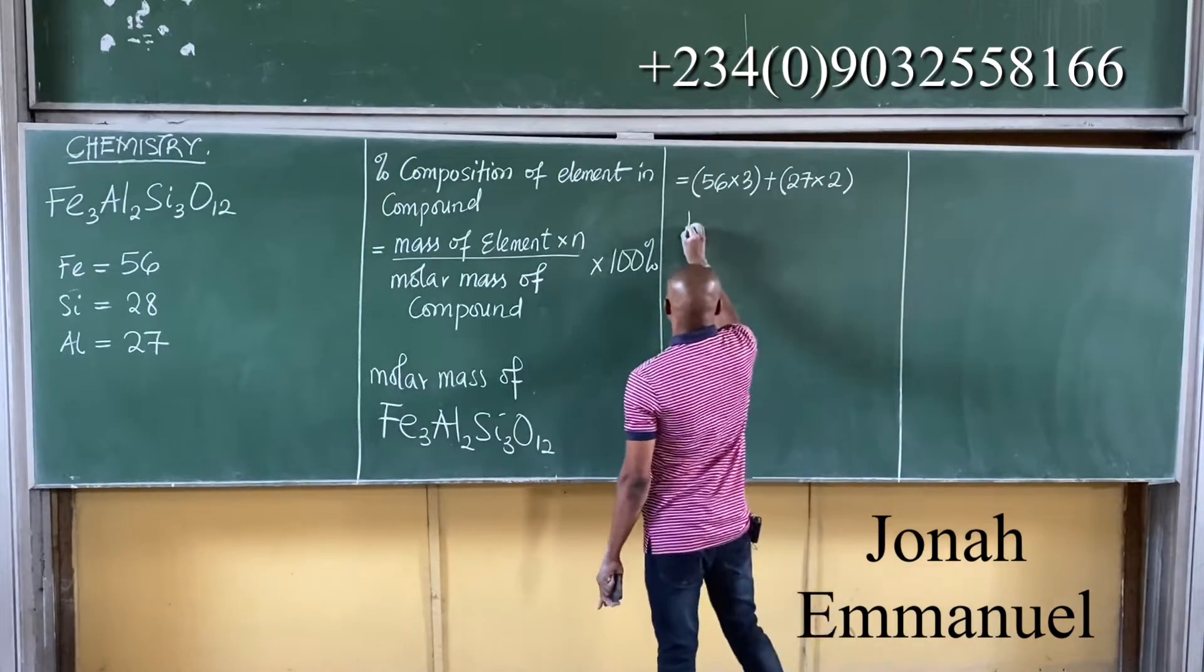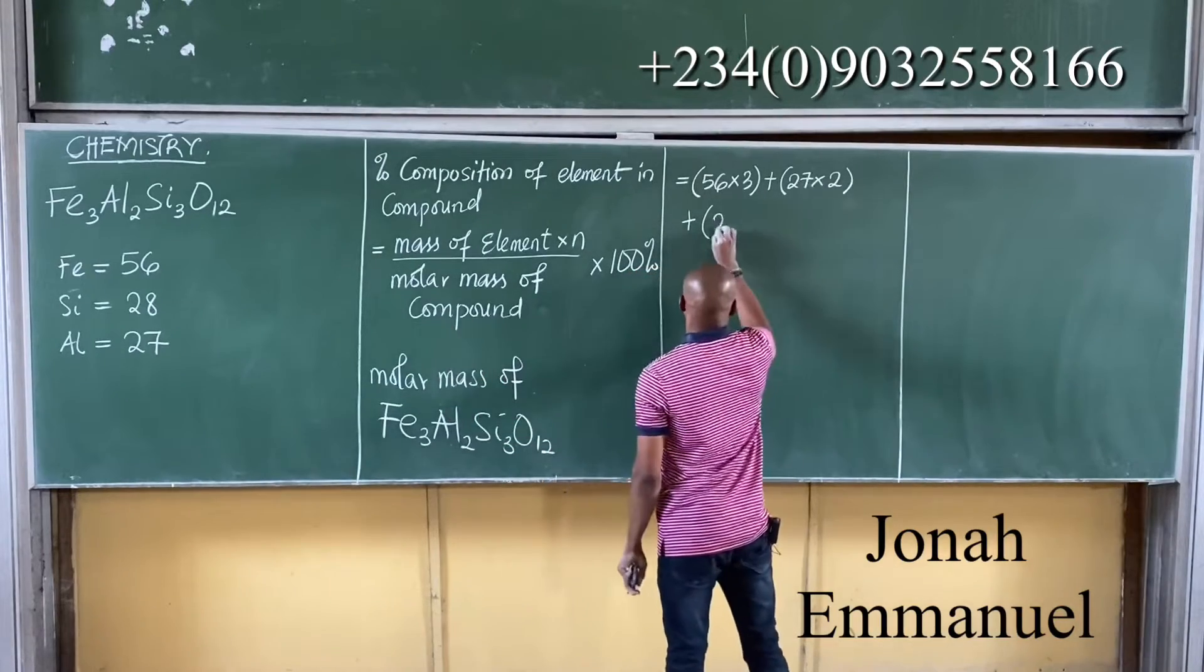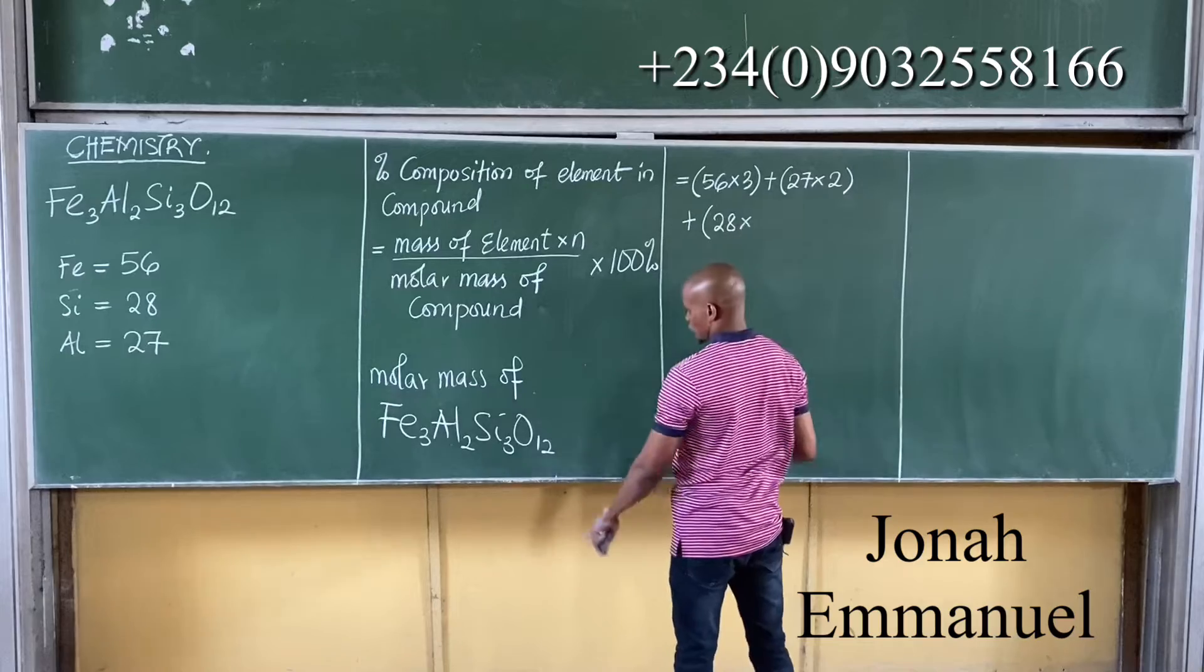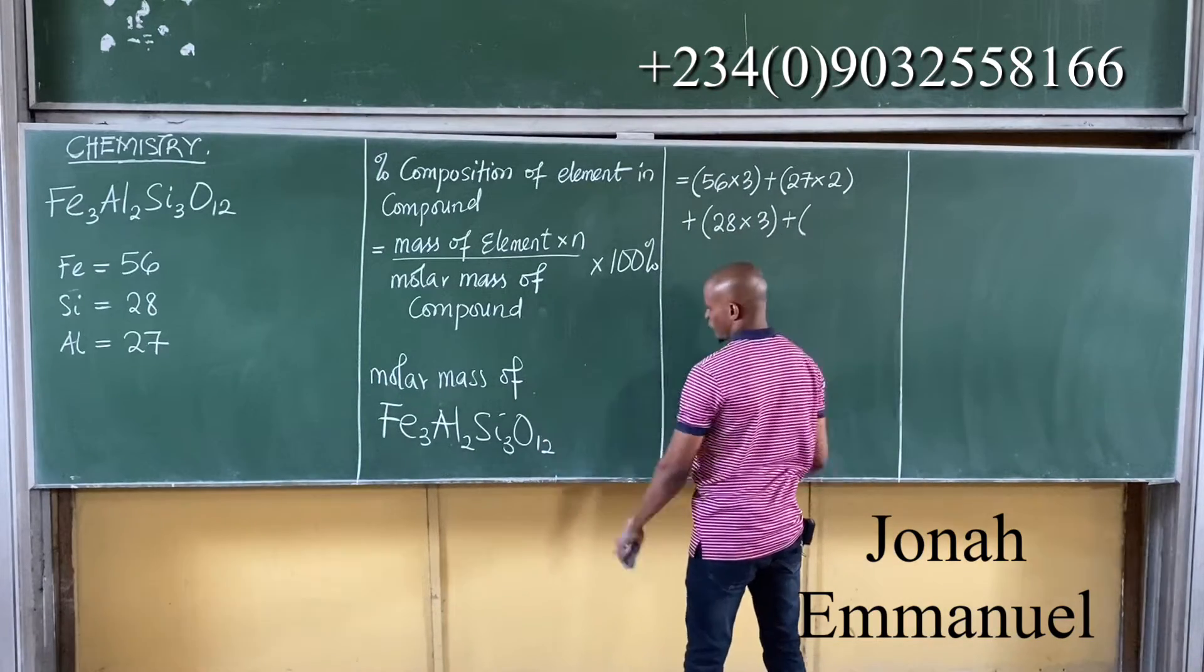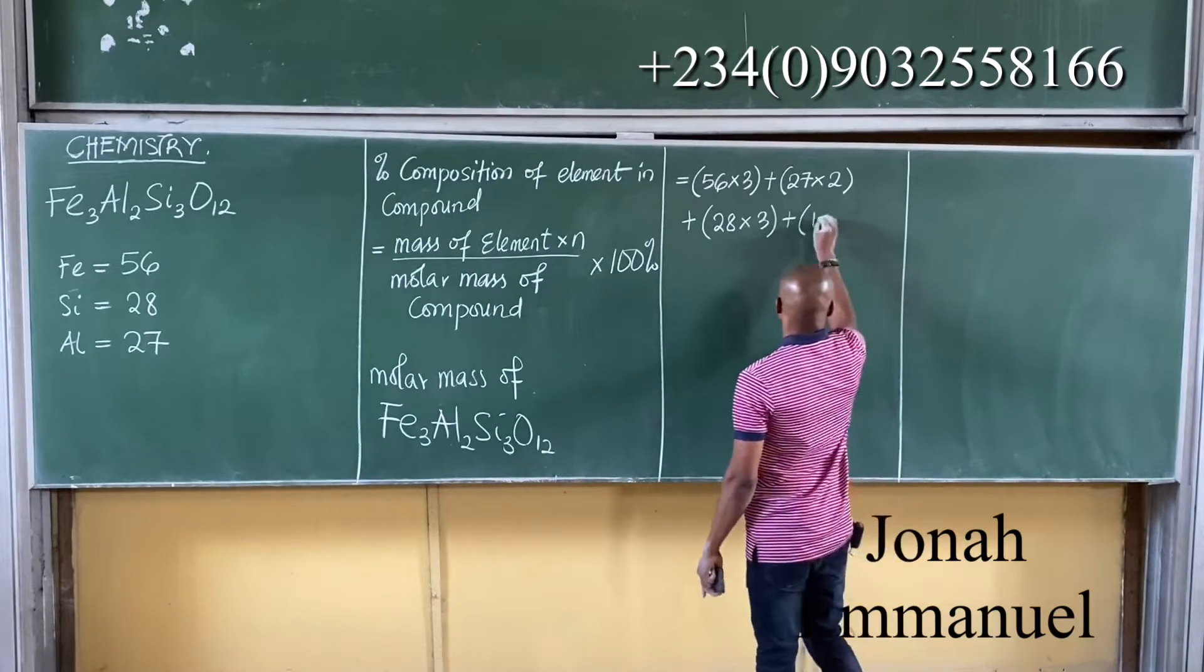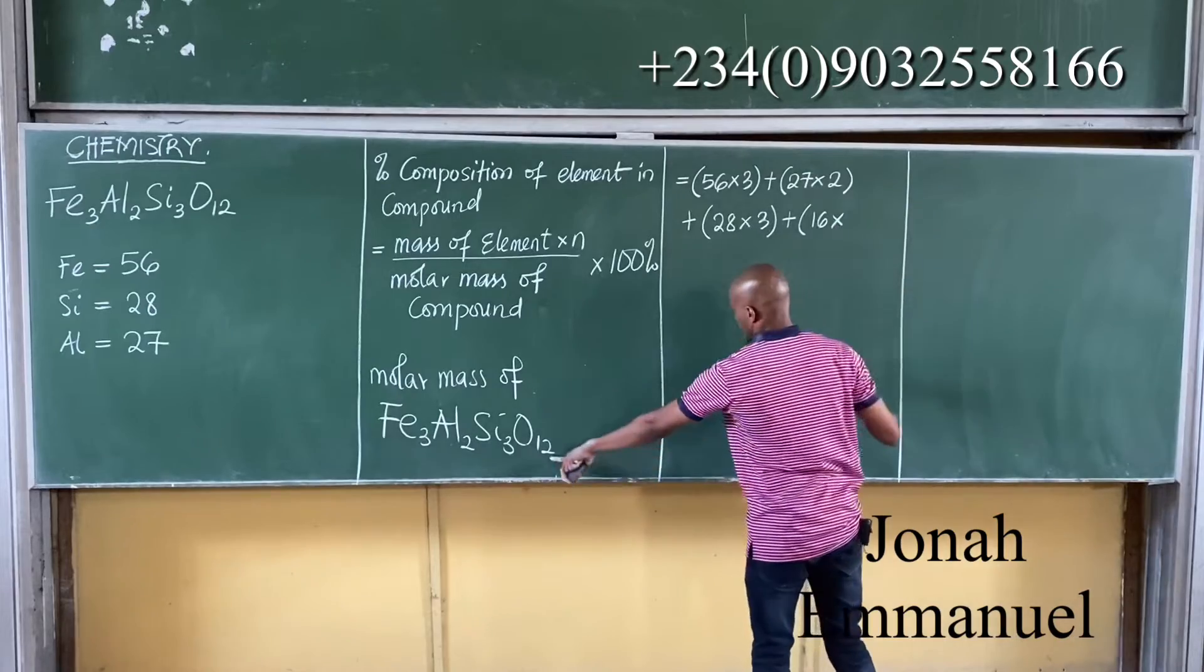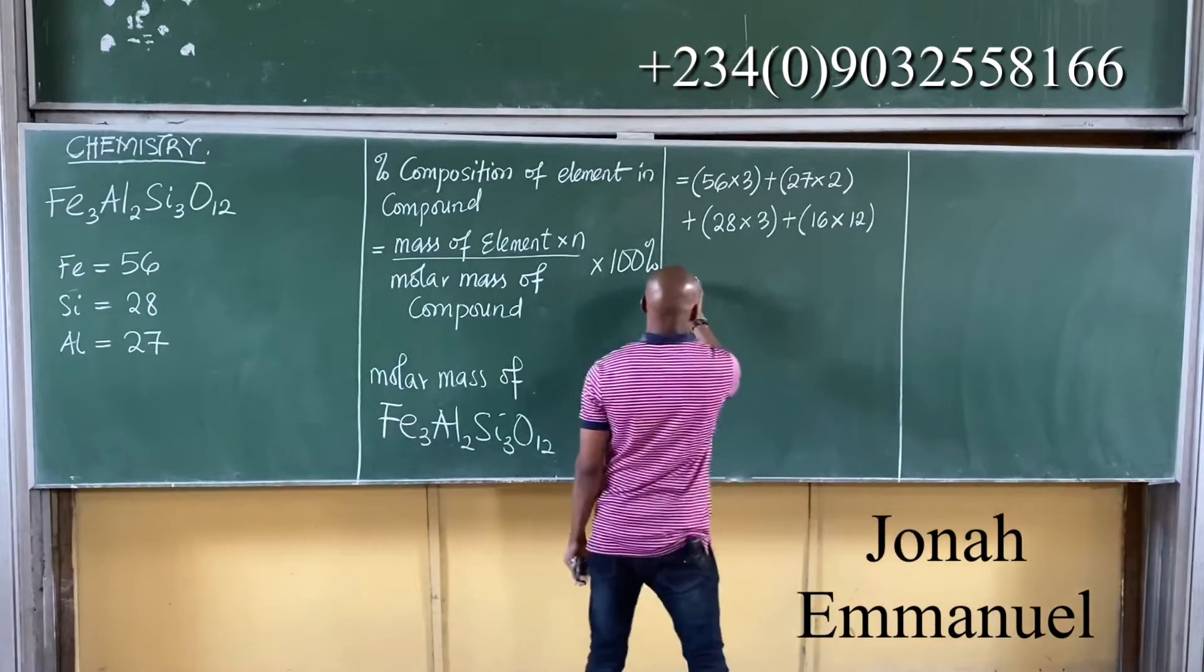plus for silicon is 28 times the number of atoms here, 3, plus for oxygen that's about 16 times 12.